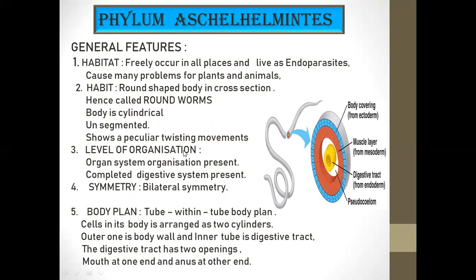Regarding level of organization: from this phylum onwards, organ system level organization is present. A complete organ system is present. For example, the digestive system is complete — it has both a first opening and a last opening. From this phylum onwards, a complete digestive system is present.